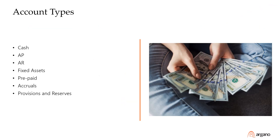There are many different account types that are validated or reconciled differently. For cash accounts, they compare the GL balance to the bank balance. For AP accounts, they compare the GL to the sub-ledger. For AR accounts, they compare the GL to the sub-ledger and analyze the aging of receivables. For fixed asset accounts, they compare the GL to the sub-ledger and perform a roll forward.